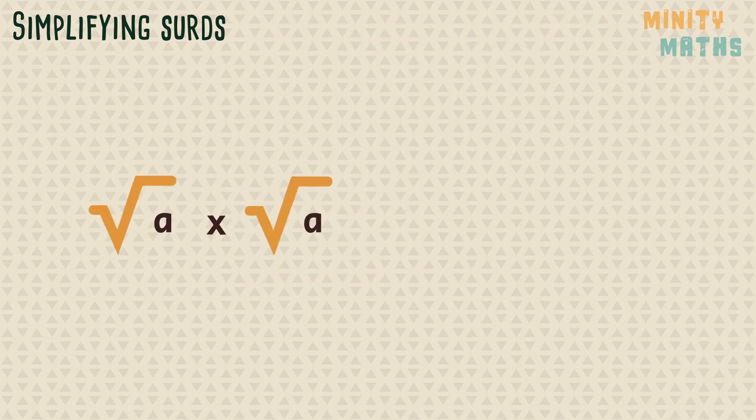Finally, here is another rule where multiplying a surd with the same number under the root sign will always result in a whole number, not a surd.